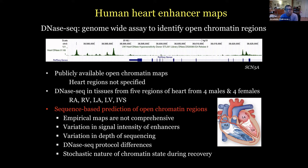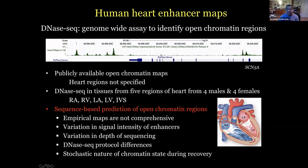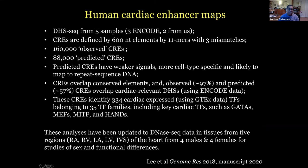We started initial work on human cardiac enhancer maps in which we took data from ENCODE and other studies and made combined maps. The reason is that empirical observations of enhancers are not comprehensive: there's variation in signal intensity, variation in depth of sequencing across studies, protocol differences in assays — DNase-seq for some, ATAC-seq for others — and of course stochastic nature of chromatin state during recovery. We did five samples, some from us, three from ENCODE. CREs were defined by 600-nucleotide elements with a collection of 11-mers allowing mismatches.